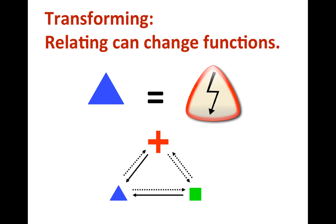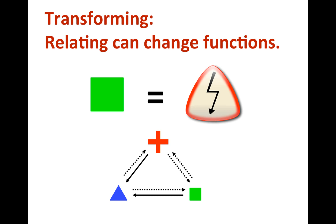There are plenty of RFT experiments that show how relating changes functions. For example, if I tell you that when the blue triangle appears on the screen you will receive an electric shock but can avoid it by pressing a button, you will probably press the button when the blue triangle appears. And because you derive relations, and you learned earlier that the red cross and the green square are the same as the blue triangle, you will probably press the button when you see these pictures too. Relating has changed the function of these pictures — they now warn you that a danger is coming.